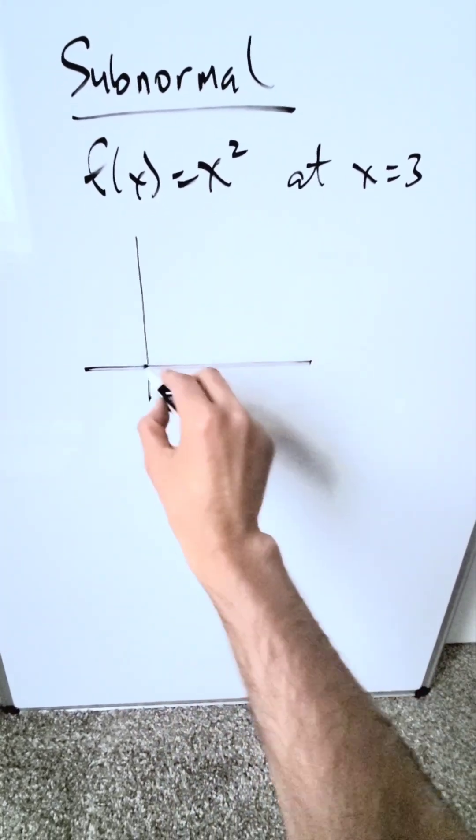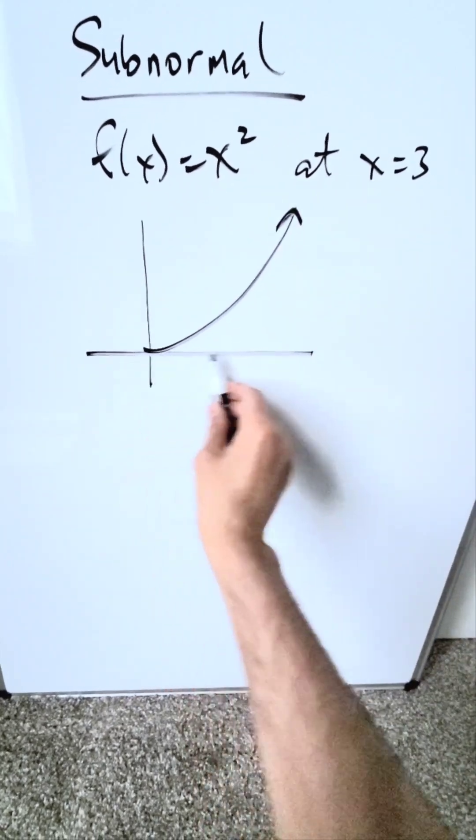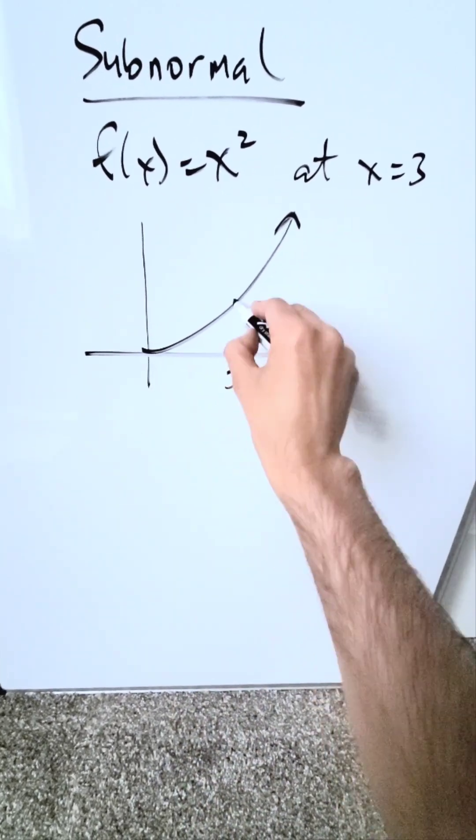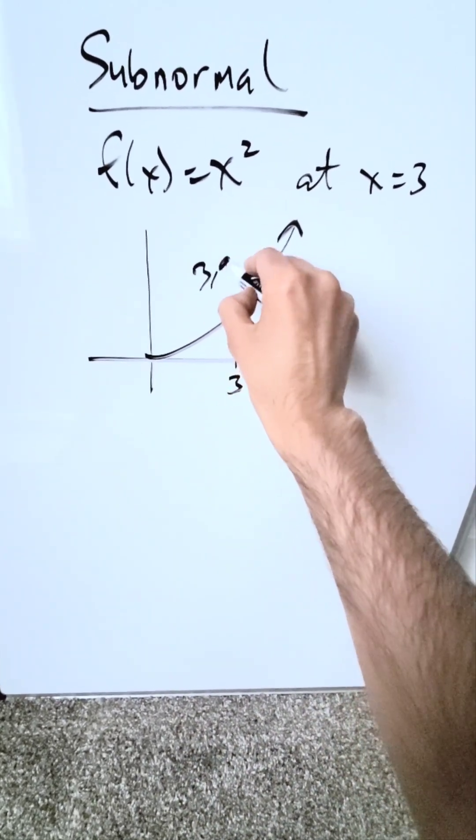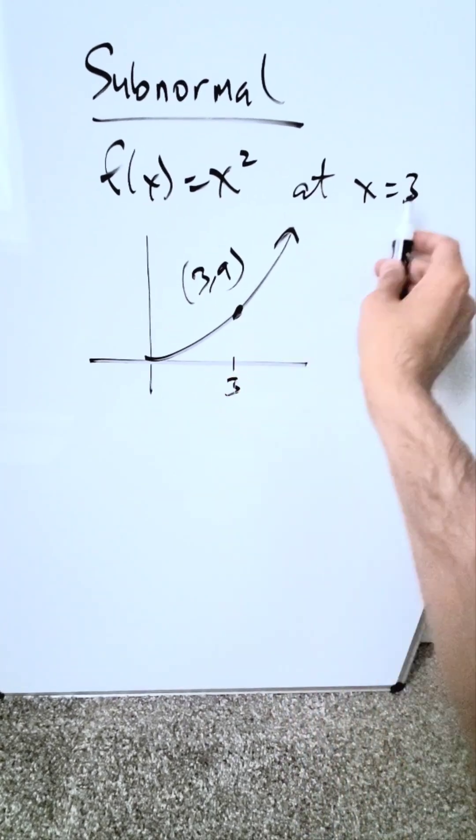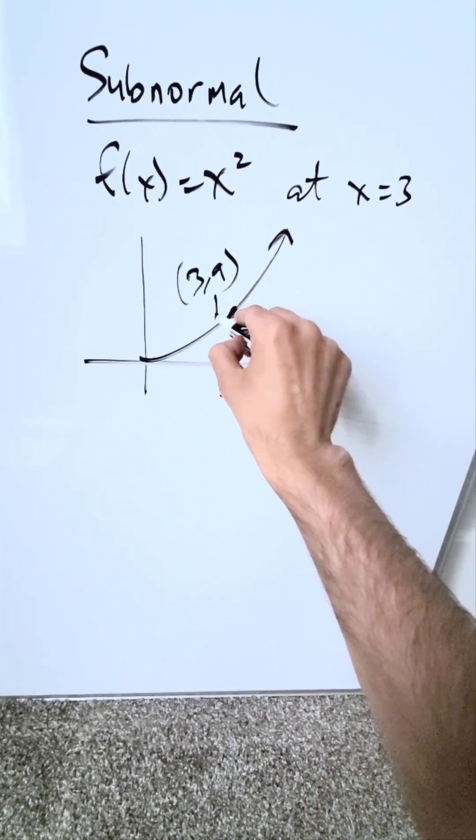X squared would look like this. Limited domain from 0 up to infinity. Here's my point 3 if I project it, and nothing here is drawn to scale. It'll be 3 comma 9. You put 3 in x squared you have a 9. Here's my point P.